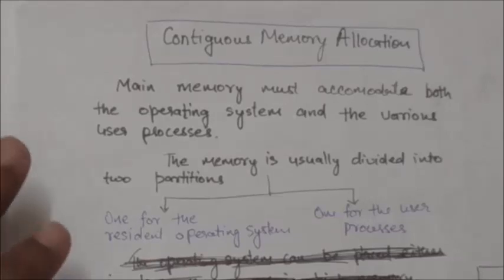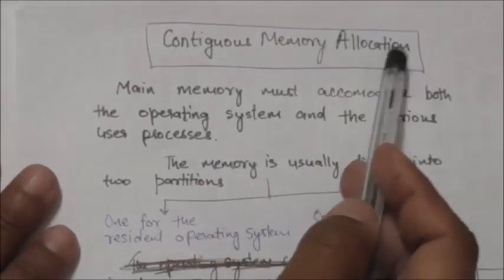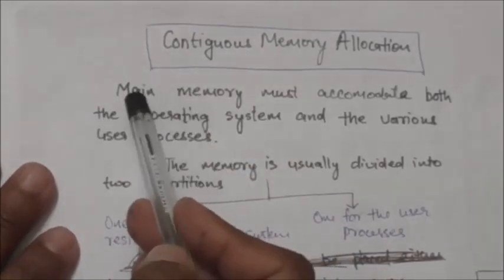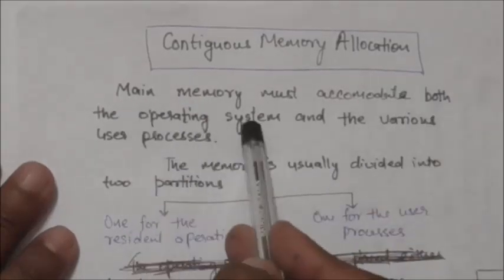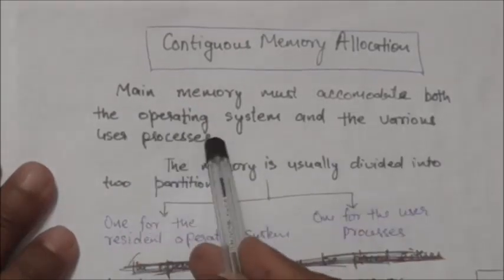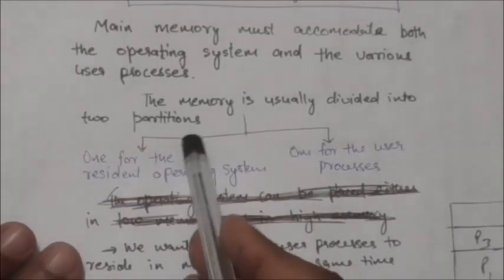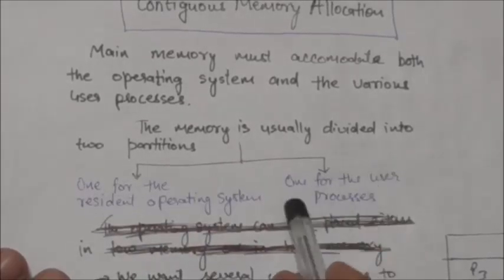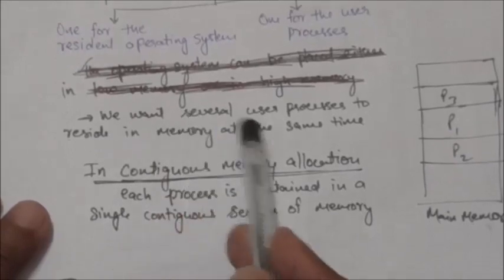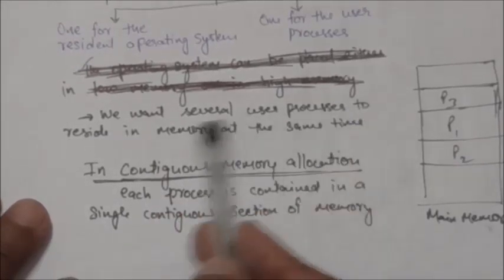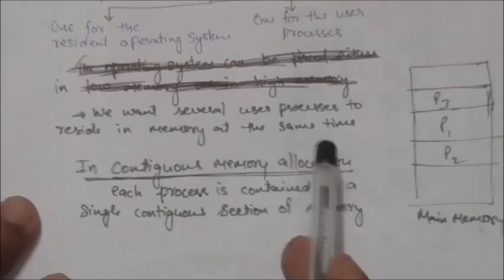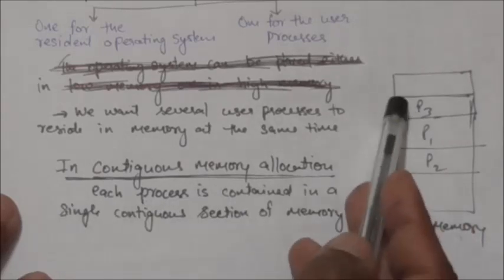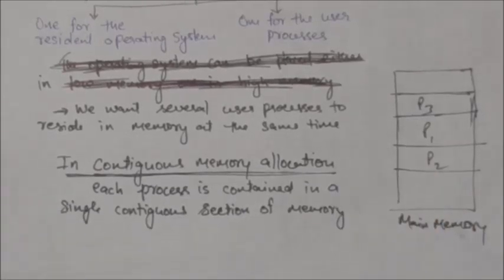Hello friends, welcome back. In this tutorial we will study about contiguous memory allocation. A process can be executed only when it is in main memory, so the main memory must accommodate both the operating system and the various user processes. The main memory is usually divided into two partitions: one for the resident operating system and one for the user processes, and we want several user processes to reside in main memory at the same time. In contiguous memory allocation, each process is contained in a single contiguous section of main memory.